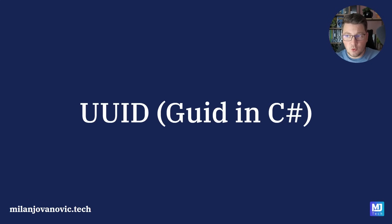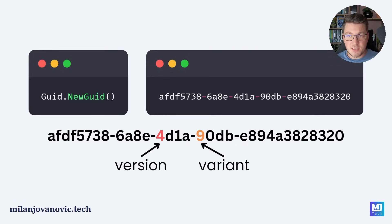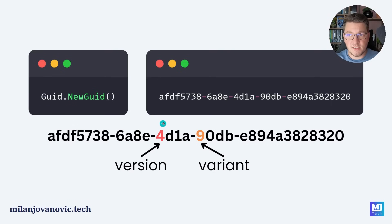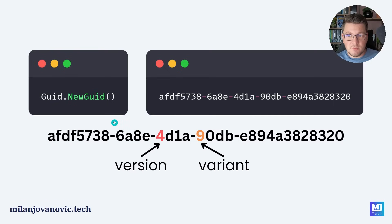Let's first talk about UUIDs or GUIDs in C#. A GUID, or globally unique identifier, is a built-in type in .NET and you can call the static method NewGuid to obtain a new GUID instance. C# GUIDs are actually version 4 GUIDs. Each GUID is going to contain the number 4 at a particular index in the string representation and also a variant character at another index. What you need to understand about GUIDs is that they are entirely random — a GUID is 16 bytes or 128 bits, and other than the version and variant characters, all remaining values are random.